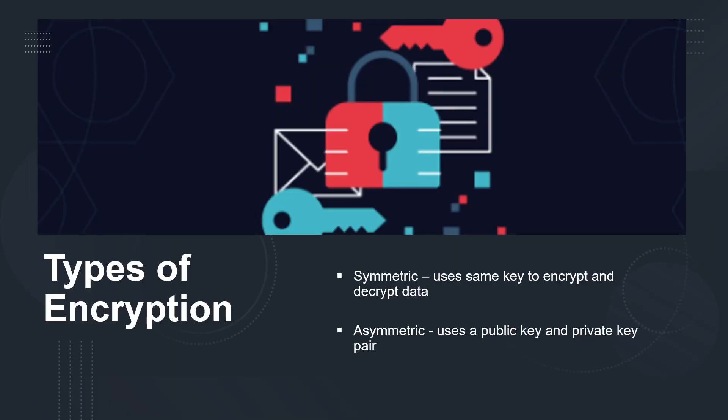Let's start by understanding the types of encryption. There are primarily two top-level types of encryption: symmetric and asymmetric. Symmetric encryption uses the same key to encrypt and decrypt the data. Asymmetric encryption uses a public key and private key pair. Either key can encrypt data, but a single key can't be used to decrypt encrypted data — to decrypt, you need a paired key. Asymmetric encryption is used for things like Transport Layer Security, known as TLS, such as the HTTPS protocol and data signing.